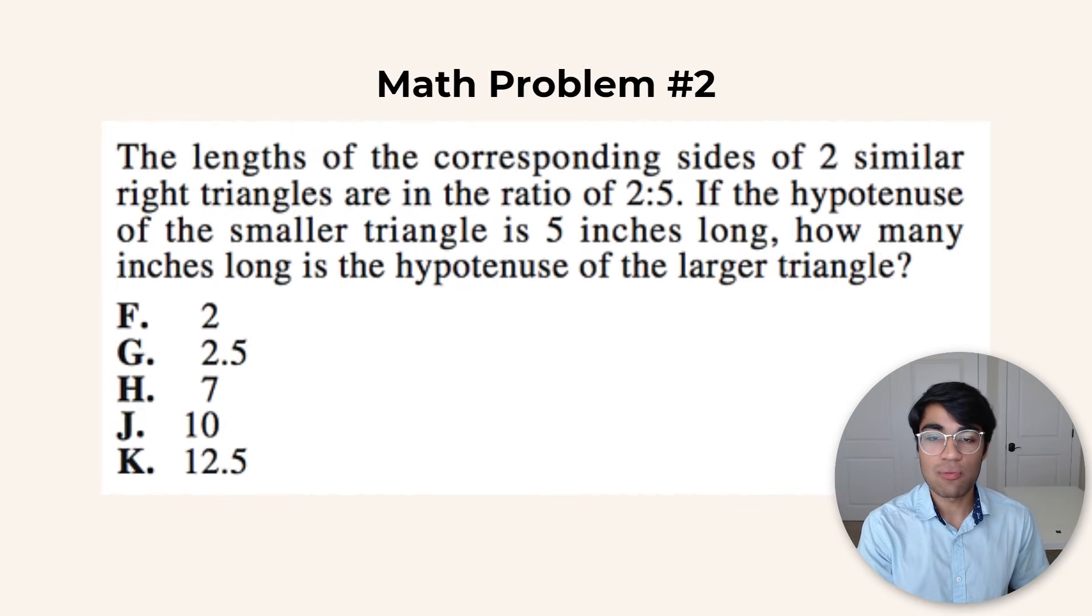Let's get into the next strategy through problem number 2. In this problem, we have two different triangles and we see that one of the sides is in a ratio of 2 to 5. To get the other side, we can approximate using this ratio. 2 to 5 tells us that one is about twice as long as the other. So if we take the value of 5 and multiply that by 2, we get 10.